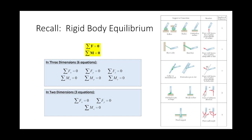Alright, today's lecture is really going to be focused on a particular example problem. I want to continue the discussion of rigid body equilibrium in two dimensions. Depending on where we end, we might introduce the 3D problem we're going to do on Wednesday, because while it's not hard, 3D problems involve a lot of vector descriptions, cross products, and grunt work. So it might make sense to chip away at that a little bit early.